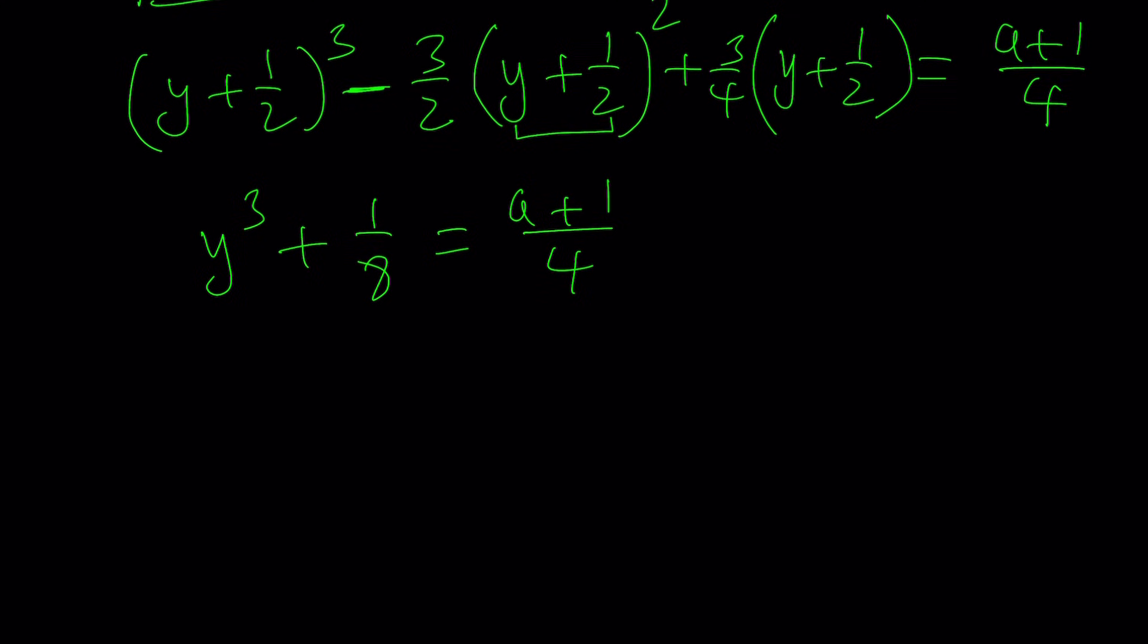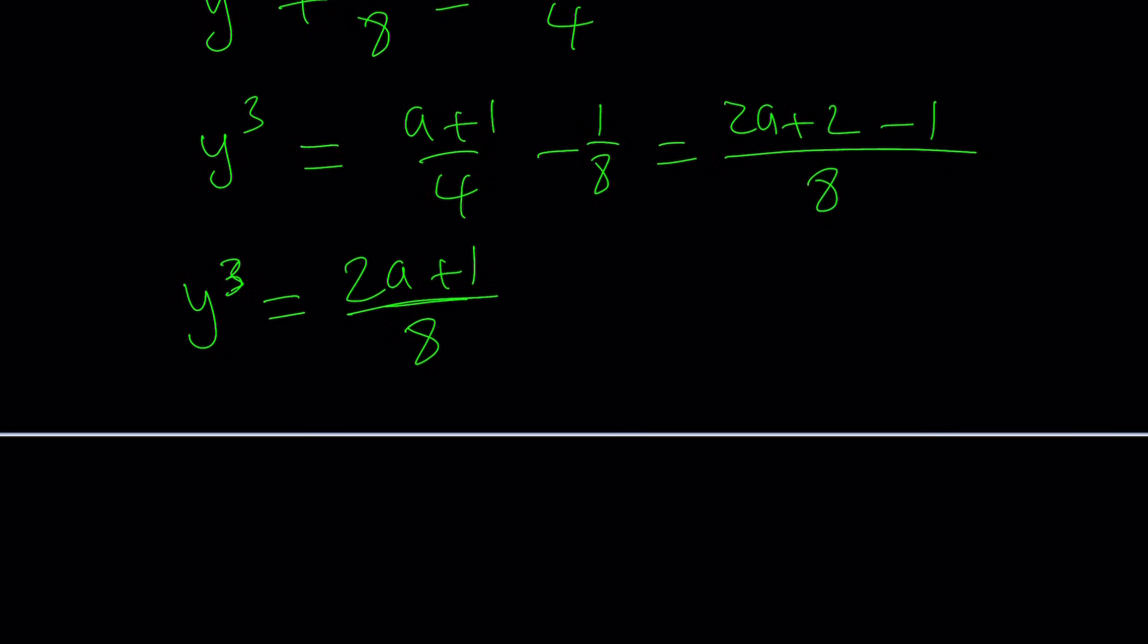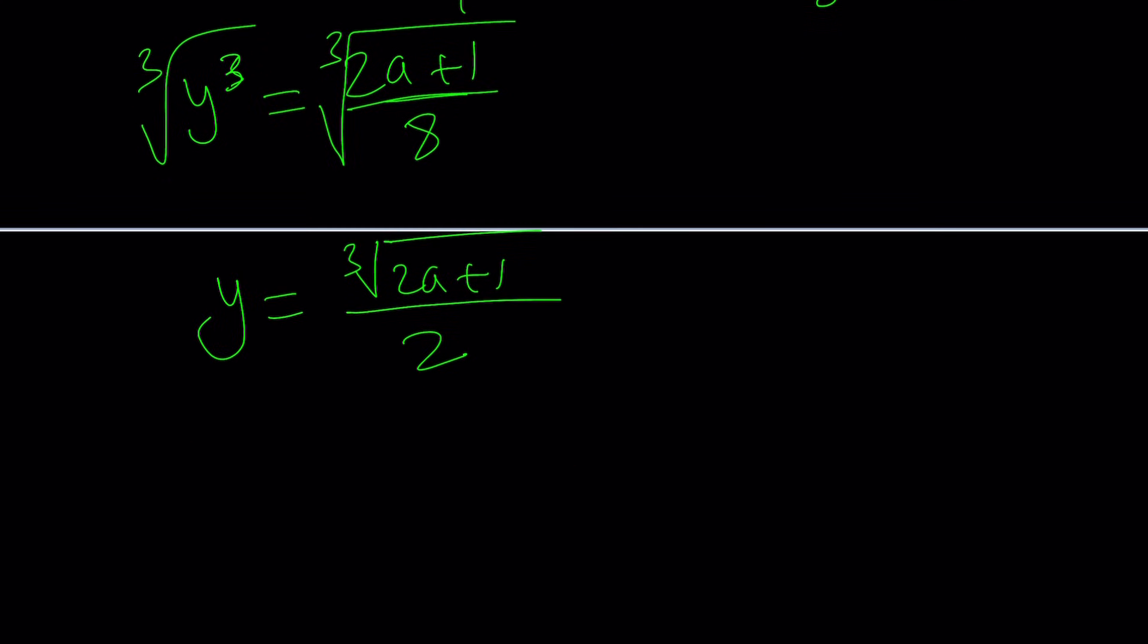Now, we're not solving for y, but we do need to find y to find x. So, let's solve for y first. I'm going to subtract 1/8. Make a common denominator. And subtract the numerators. And that should give me y³ equals (2a+1)/8. And if I cube root the top and the bottom, I can cube root both sides. Did I say cube? I meant cube root. From here, we get y equals the cube root of (2a+1) divided by 2.